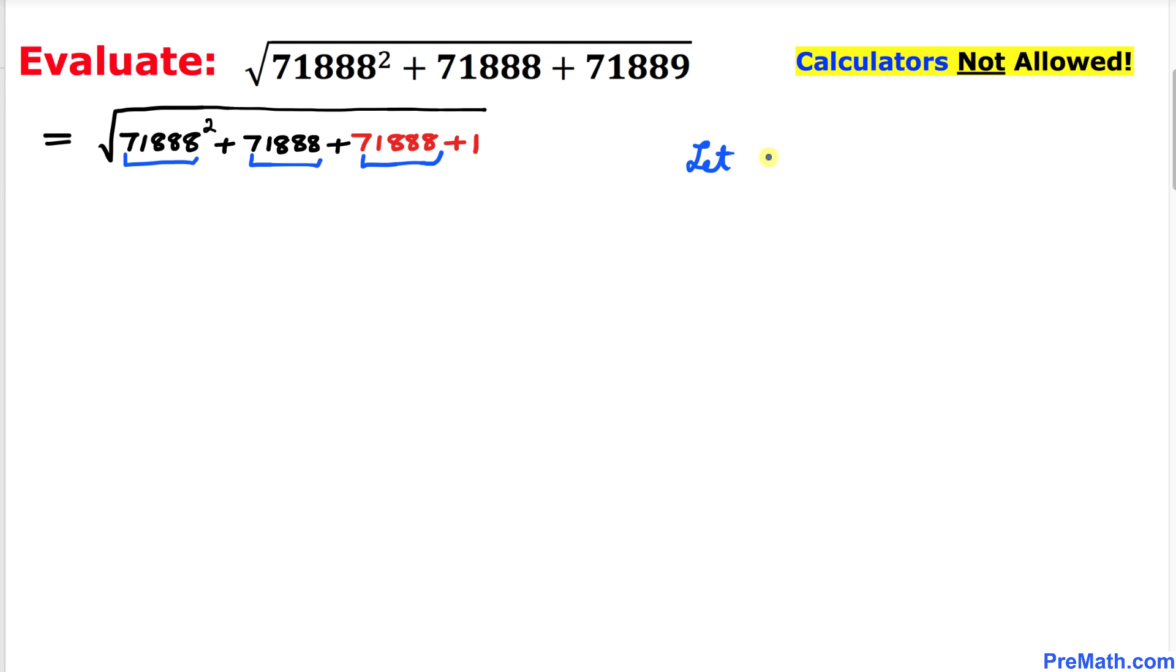I'm going to say let a equal to 71888. Then our given equation is simply going to become a squared plus a plus a plus one. In the next step, I have combined a plus a, which becomes 2a.